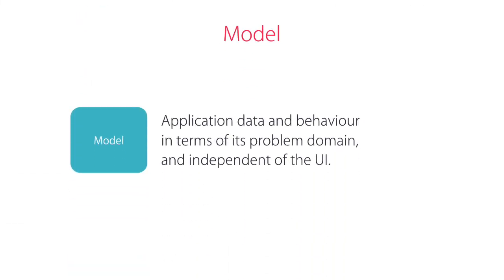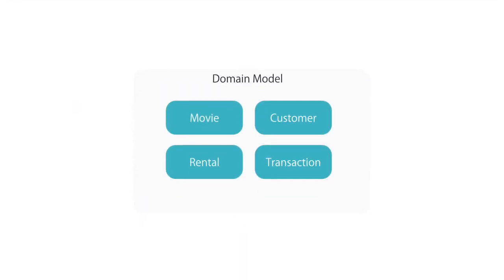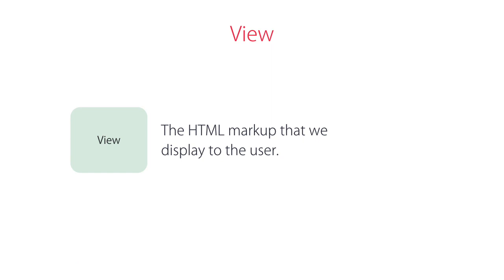In a MVC application, the Model represents the application data and behavior in terms of its problem domain, independent of the user interface. For example, in our video rental application, our model will consist of classes like Movie, Customer, Rental, Transaction, and so on. These classes have properties and methods that purely represent the application state and rules — they are not tied to the user interface, which means you can take these classes and use them in a different kind of app like a desktop or mobile app. They are plain old CLR objects, or POCOs.